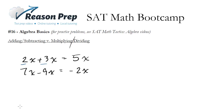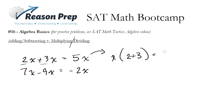Why does this happen? Well, it's really just a consequence of the distributive property. If I have the expression 2x plus 3x, I can factor out a common x out of both of these terms. I factor out my x, and what's left over? Well, it's 2 plus 3. What's 2 plus 3? Well, 5 — so this is just 5 times x. That's where it comes from, but the shortcut is you just add the coefficients and there you go.